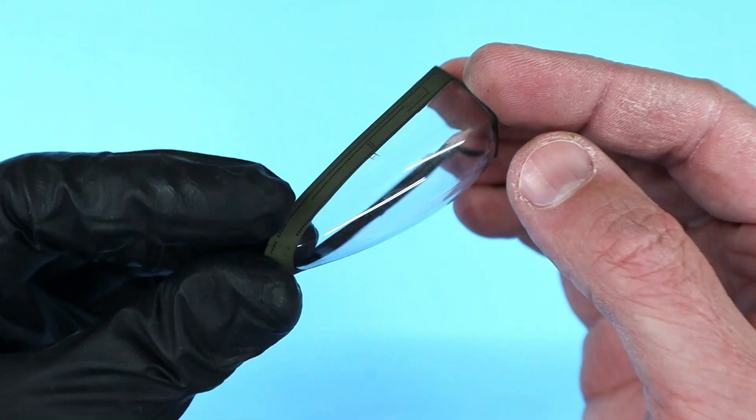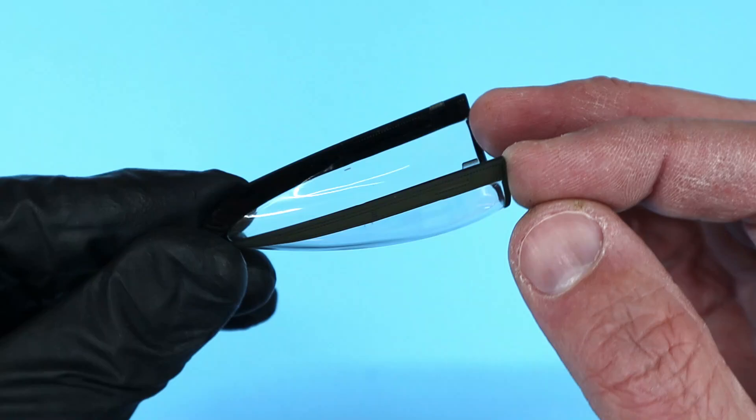If there is any tape residue left, it can easily be wiped off with a q-tip soaked in Windex or alcohol. Just avoid the painted areas of the canopy frame.